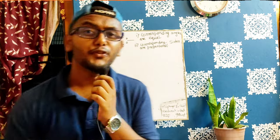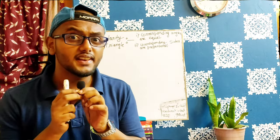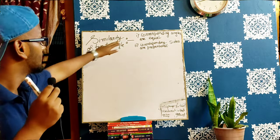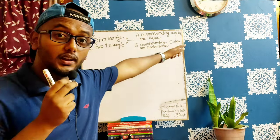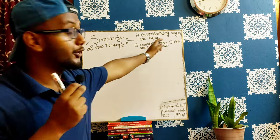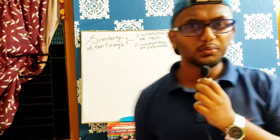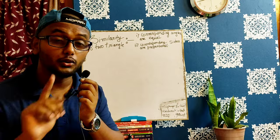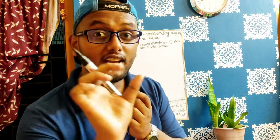Hi everyone! If we talk about the similarity of two triangles, we can say: if corresponding angles are equal then the triangle is similar, and if the corresponding sides are proportional then the triangle is similar. This is the similarity of two triangles.